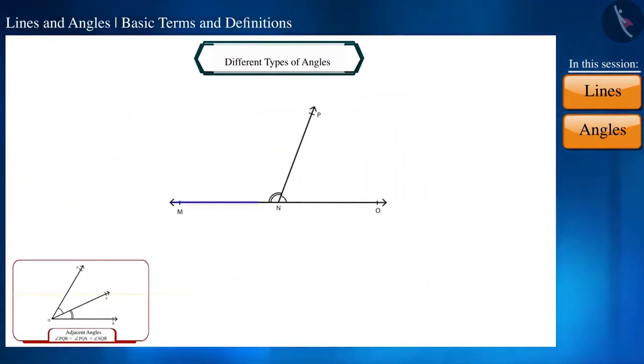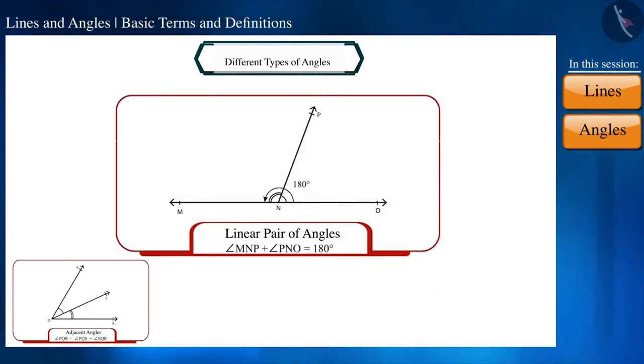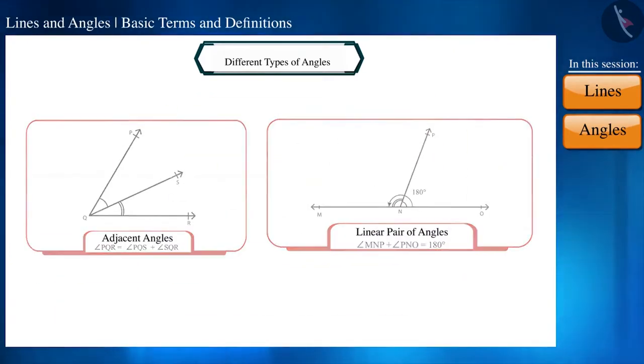Friends, look at the figure and tell if angle MNP and angle PNO are adjacent angles. Yes, the common vertex of both the angles is the point N and the common arm is NP. Here, the sum of these two angles is 180 degrees. In this way, a linear pair of angles is formed.